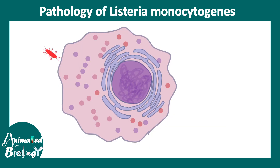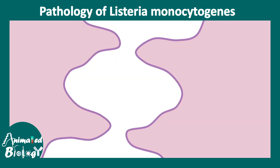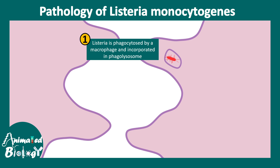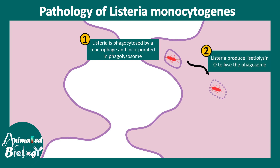Regarding the pathology of Listeria monocytogenes infection: when Listeria invades the body, macrophages try to engulf them. But Listeria has a specific mechanism to evade macrophage-mediated immunity. When Listeria is engulfed in the macrophage, a phagolysosome is created, but eventually the phagolysosome is lysed with the help of Listeriolysin O.